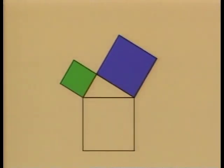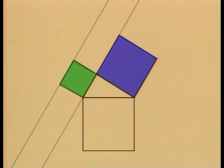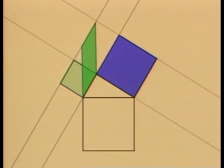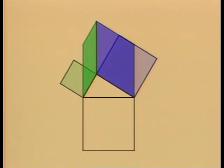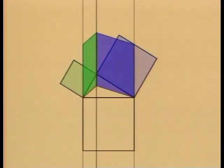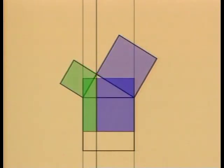Here's a variation of this proof that some people like better. All parallelograms of the same base and altitude have equal areas. So all these parallelograms have equal areas, as do all these. And that's all there is to it.